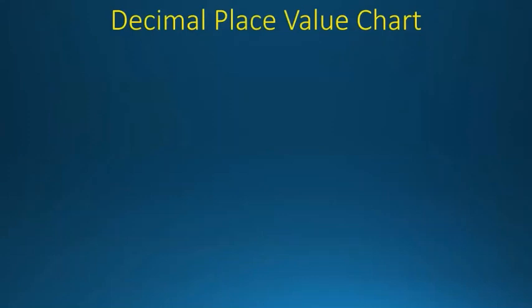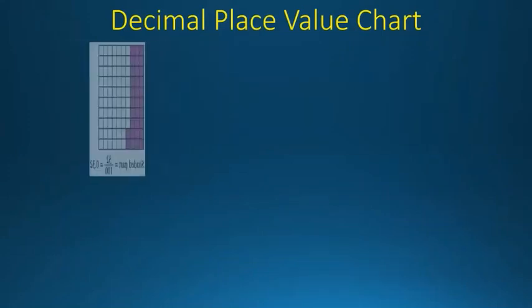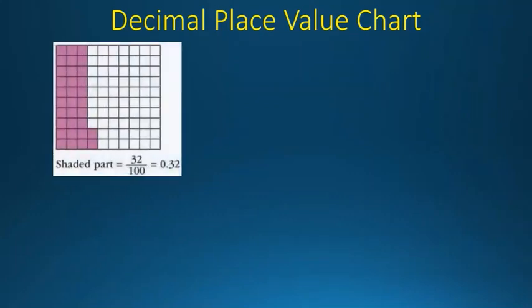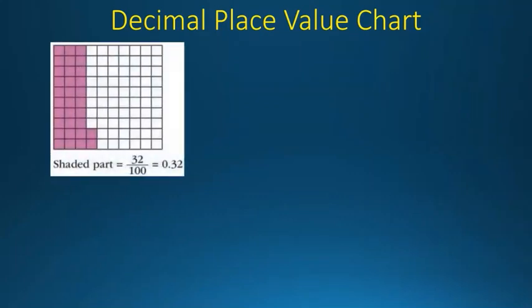Now we will continue learning about the decimal place value chart. As you can see here we have 100 cubes again. There are 3 lines which are shaded and in the 4th line only 2 are shaded, which is 32. So the shaded part is equal to 32/100 or 0.32. Now we have to calculate the unshaded part. One way is 100 minus 32 which equals 68.